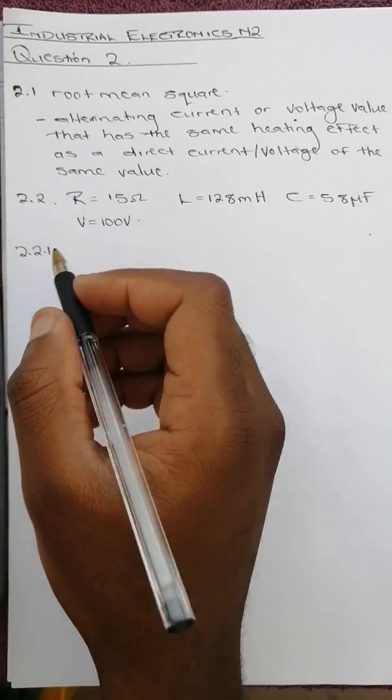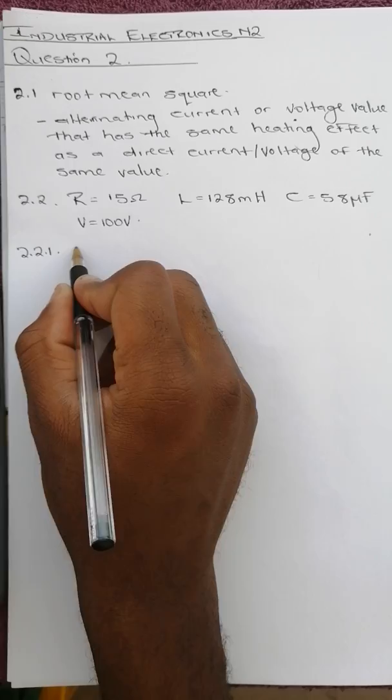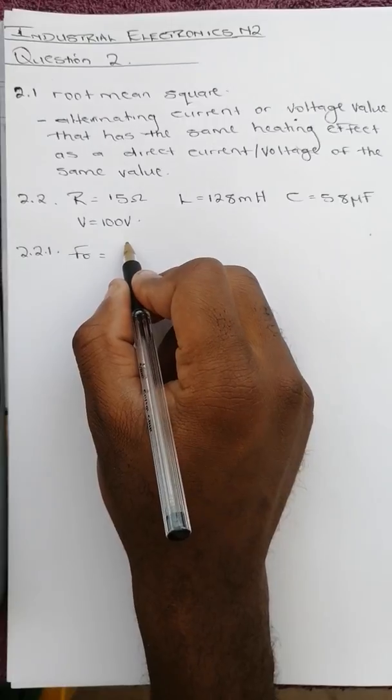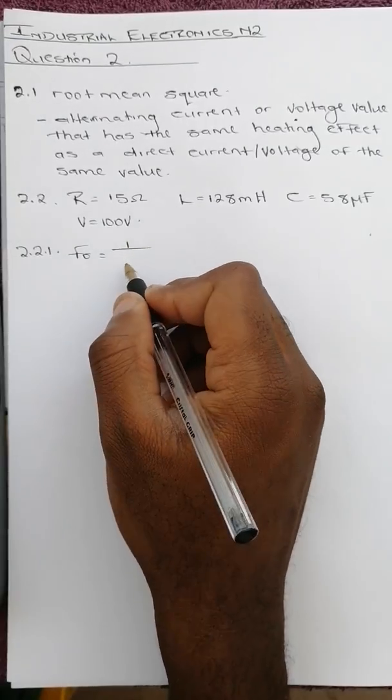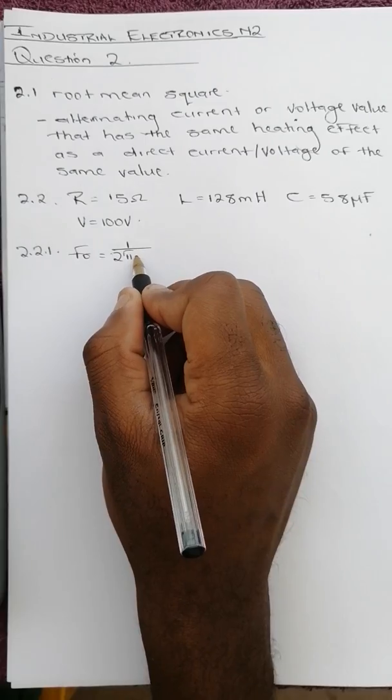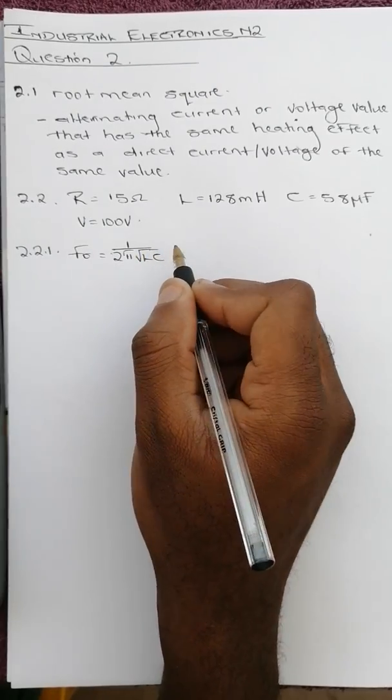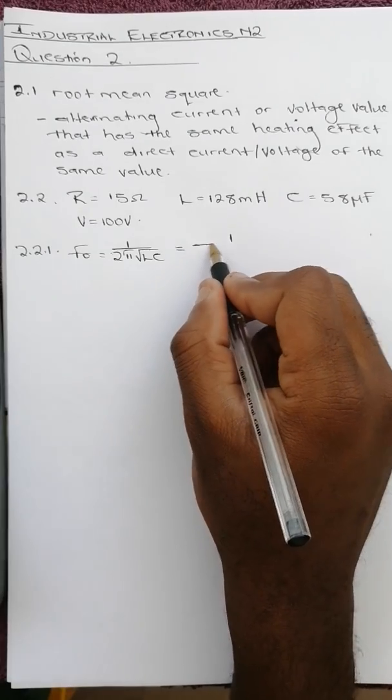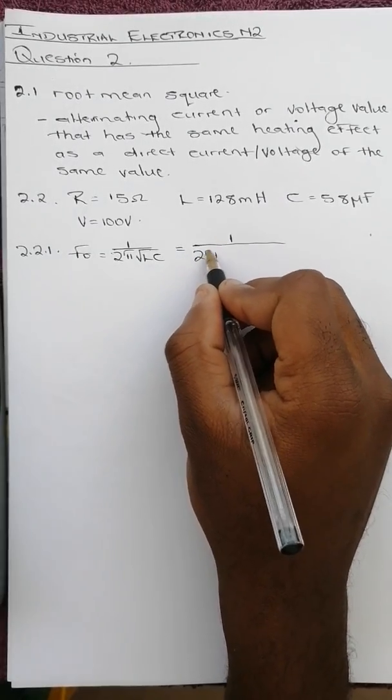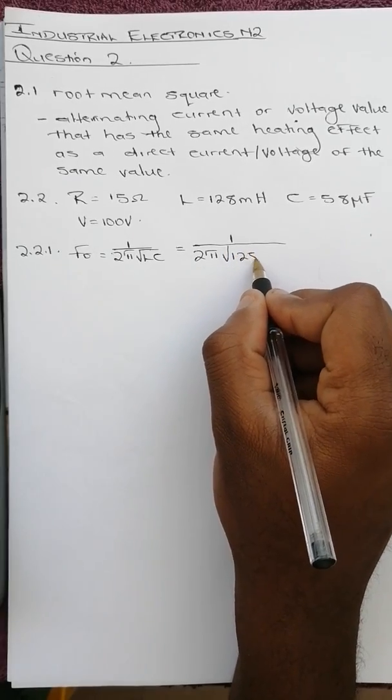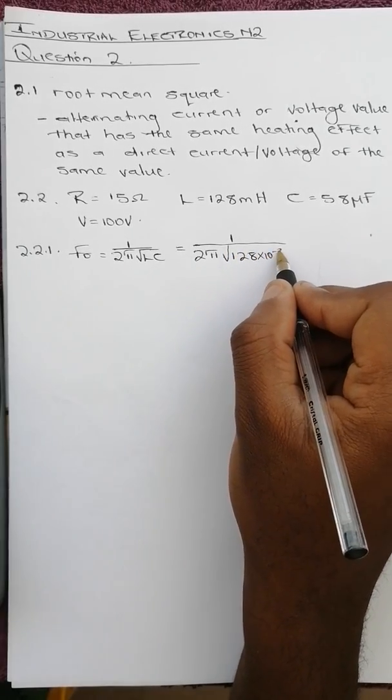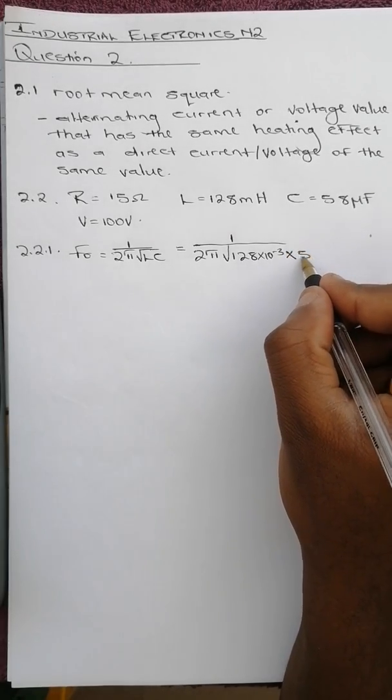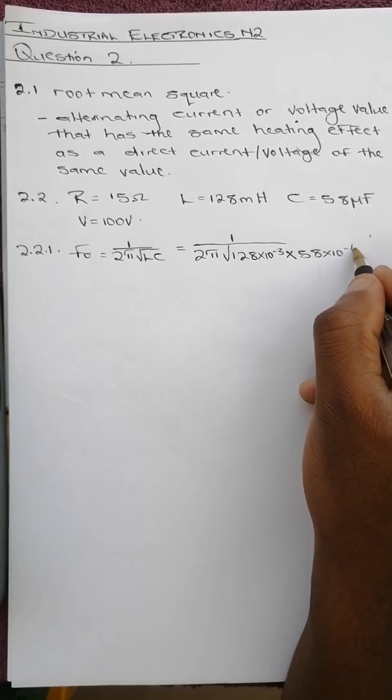calculate resonance frequency. We know that FR is given by the formula which is at the back of the equation paper in the formula sheet, which is 1 over 2 pi square root of LC. Substituting what we have is going to be 1 over 2 pi square root of L which is 128 times 10 to the power negative 3 since it's millihenries, times capacitance 58 micro so it's 10 to the power negative 6.